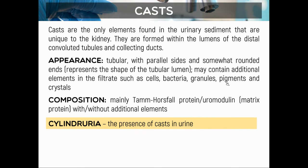The composition of casts is Tamm-Horsfall protein, also known by its new name uromodulin — a normal type of protein produced in the tubules by RTE cells. The presence of casts in urine is called cylindruria. So the responsible protein for cast formation is Tamm-Horsfall protein, now termed uromodulin.